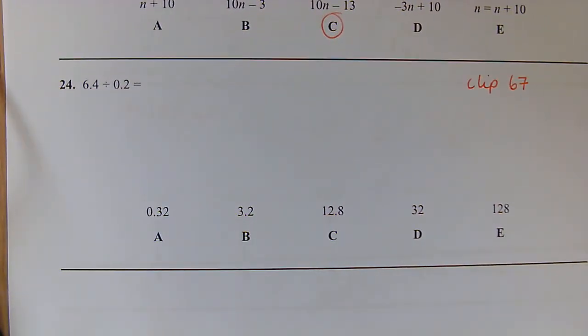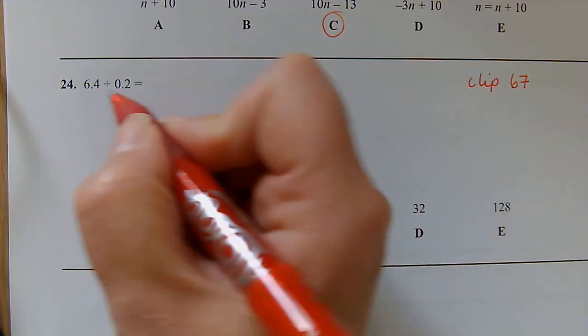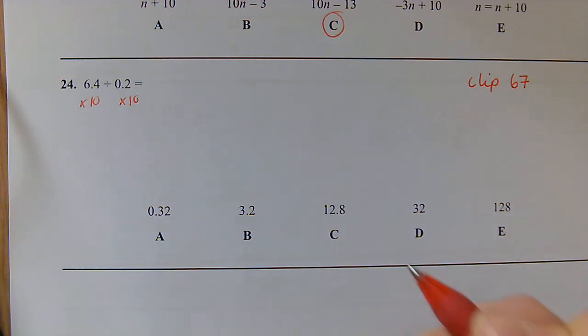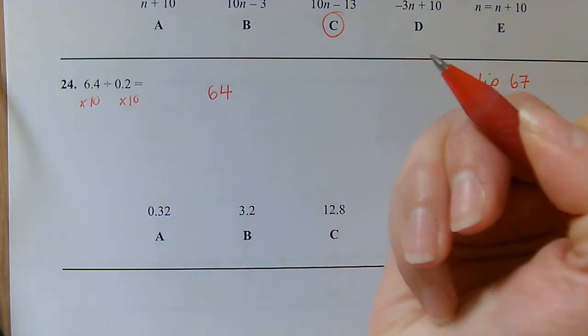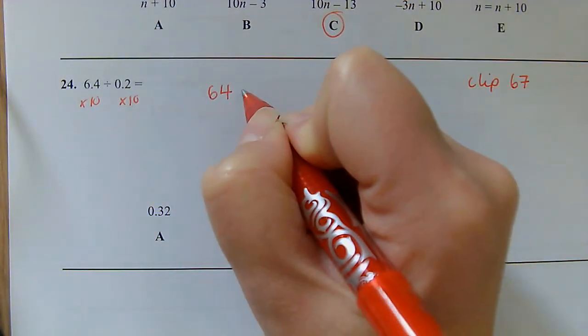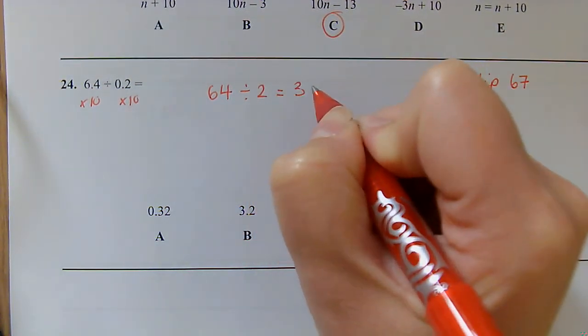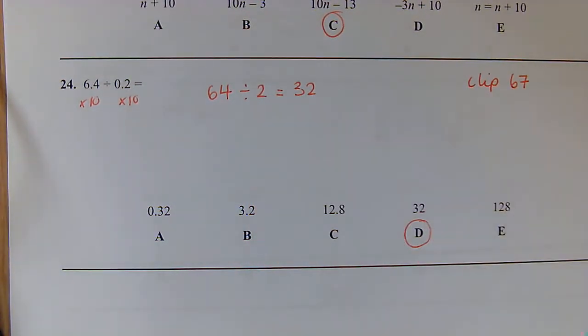Question 24: We're dividing decimals this time. So in order to do this, I would multiply each of those numbers by 10 so then we're not actually dealing with any decimals. We end up with 64 divided by 2, which gives us 32, D.